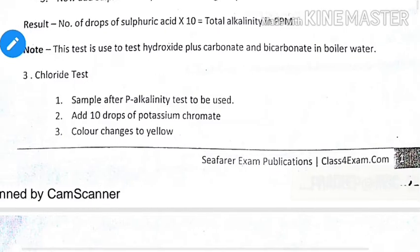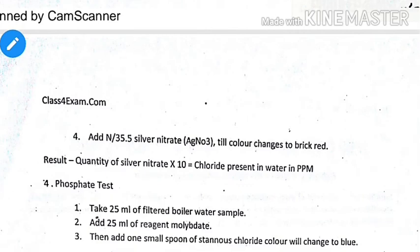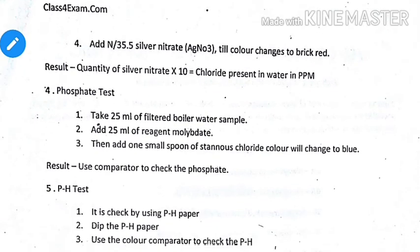For the chloride test procedure: take a 1 mL boiler water sample and add 10 drops of potassium chromate — color changes to yellow. Then add N/25.5 silver nitrate until the color changes to brick red. The quantity of silver nitrate multiplied by 10 equals the chloride present in water in ppm.